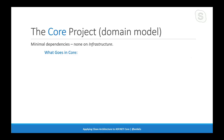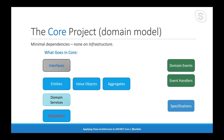Before jumping into eShop on Web, let's talk about the different projects. The application core project contains interfaces, entities, aggregates, value objects — domain-driven design patterns whose implementations typically live in core. Domain services that are purely business logic should be in core as well. Custom exceptions, domain events and event handlers, and specifications — which we'll look at if we have time — also live inside the core project.